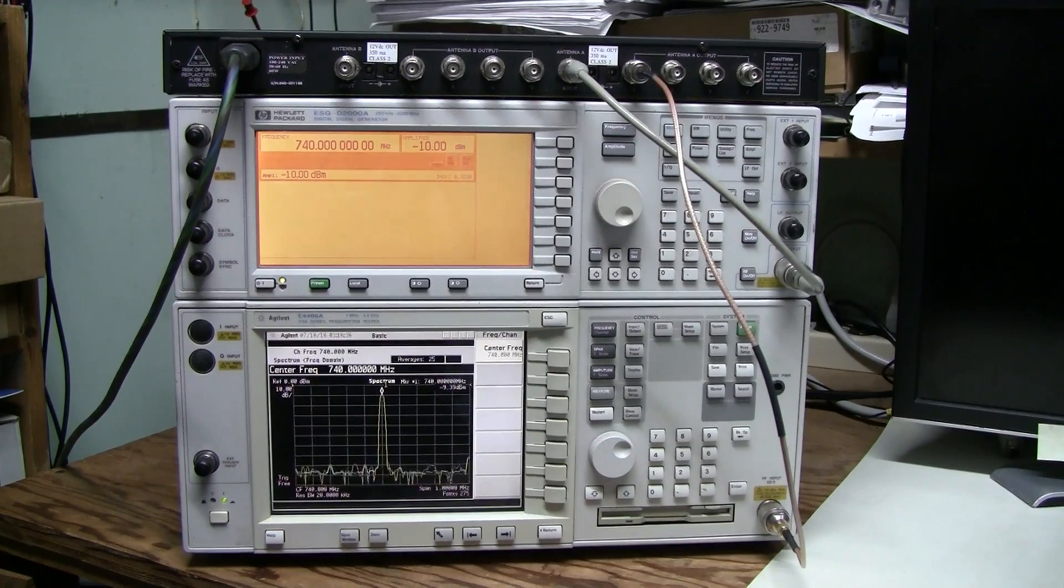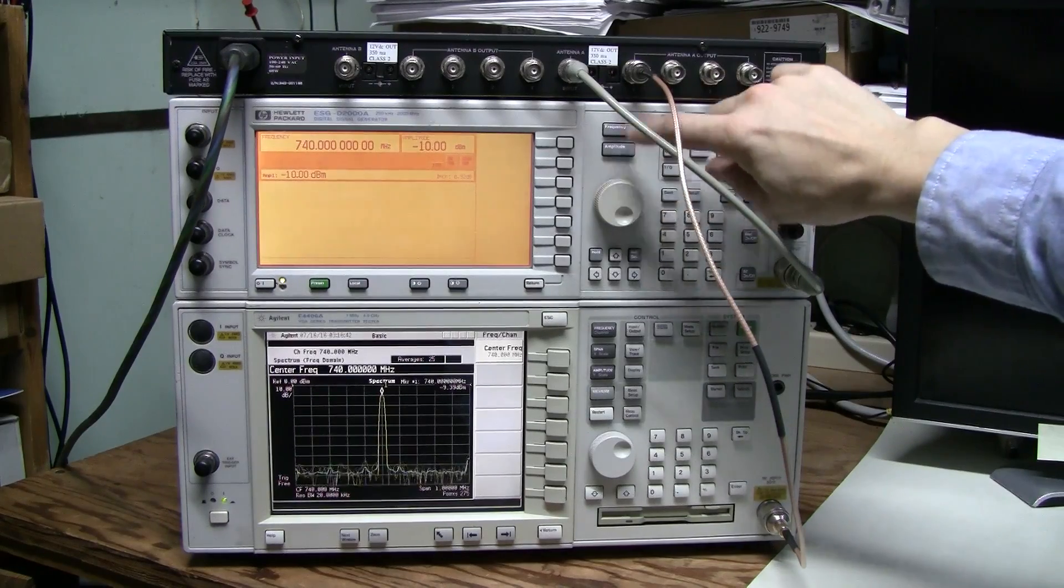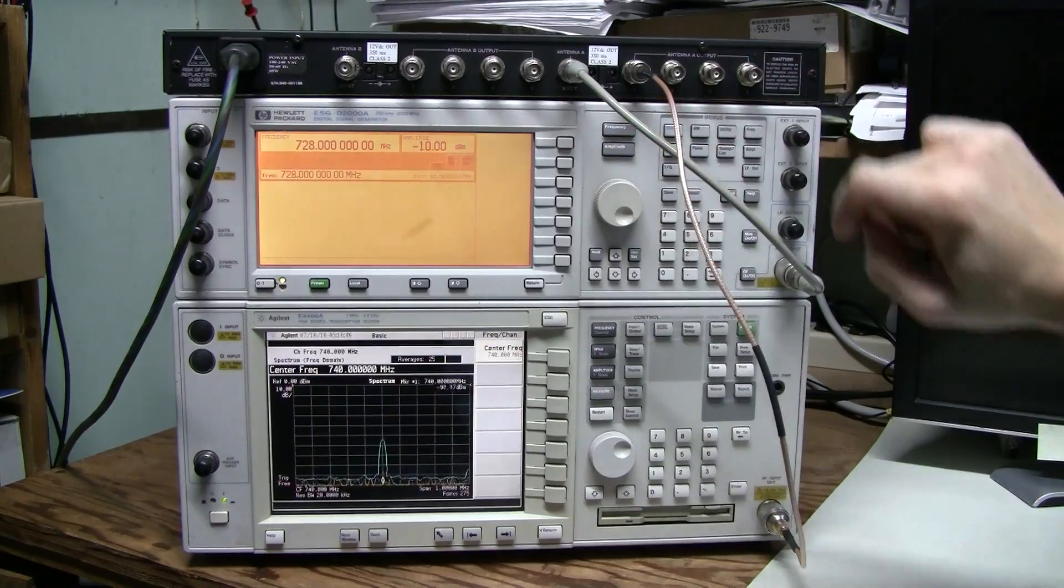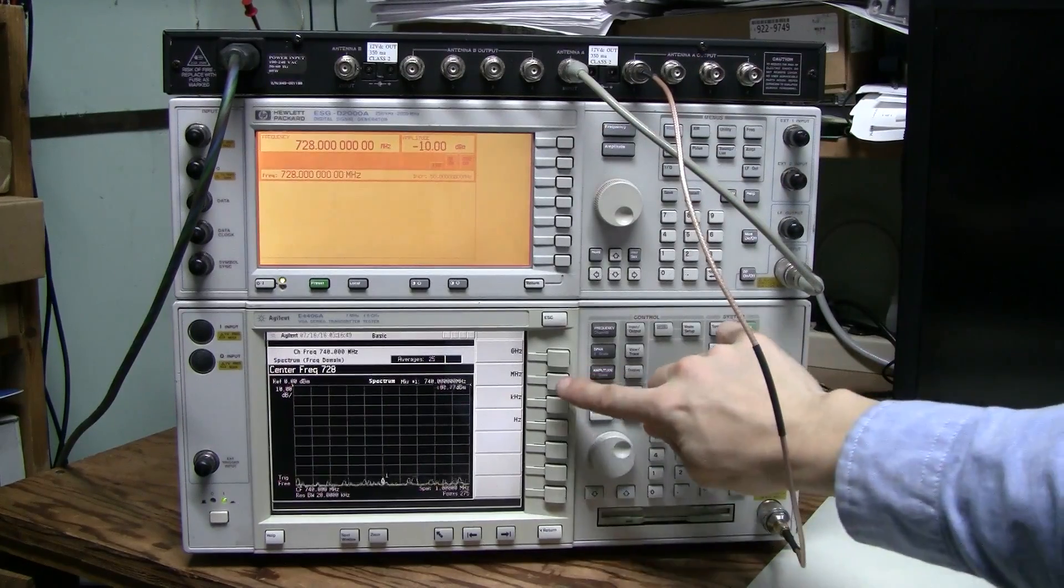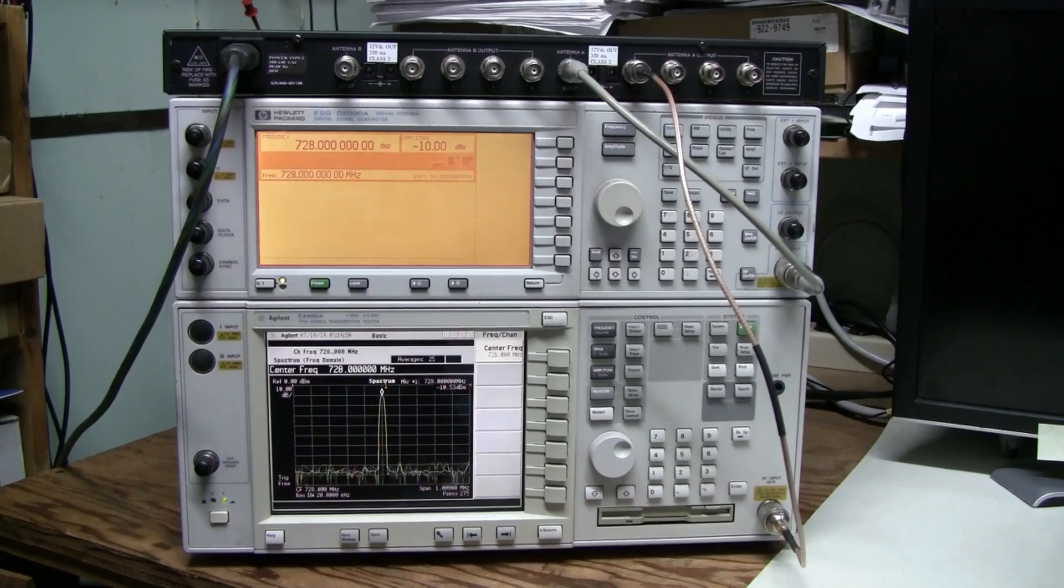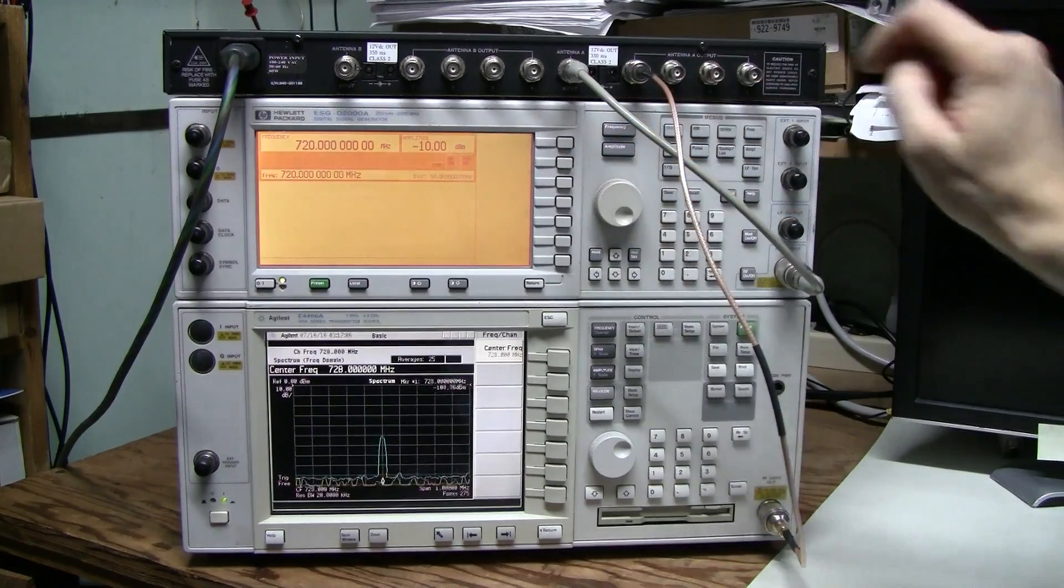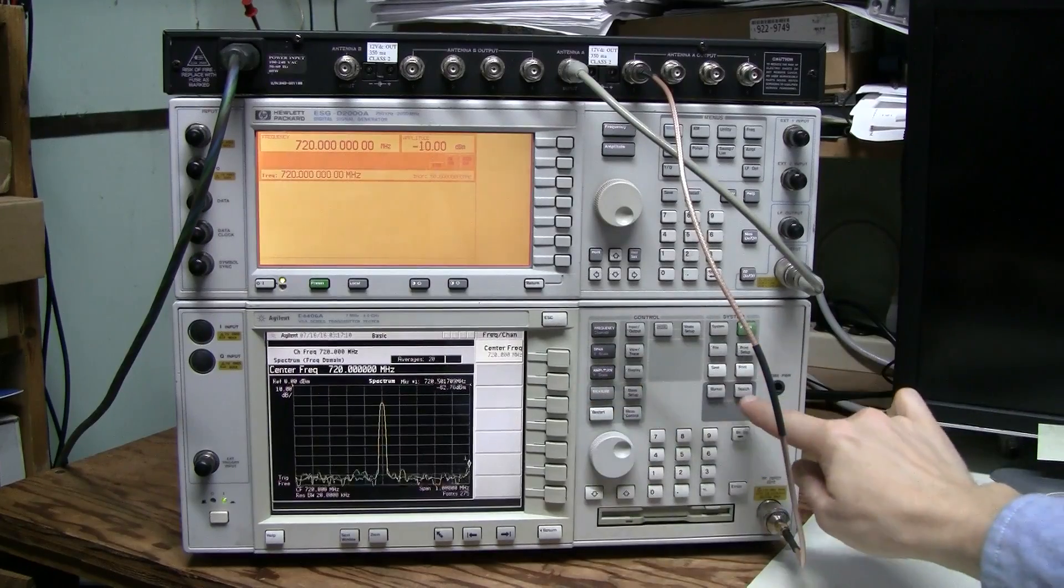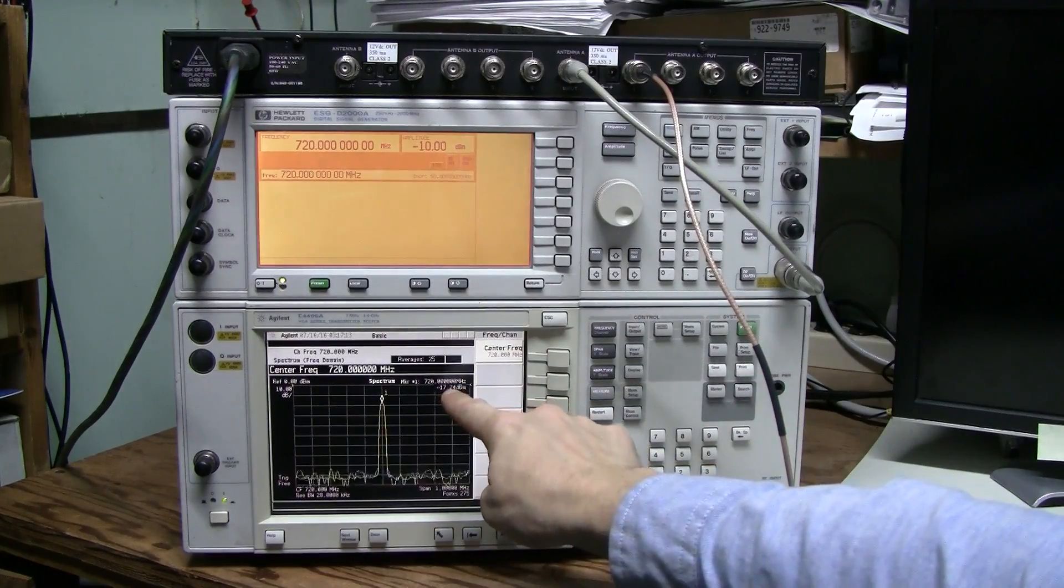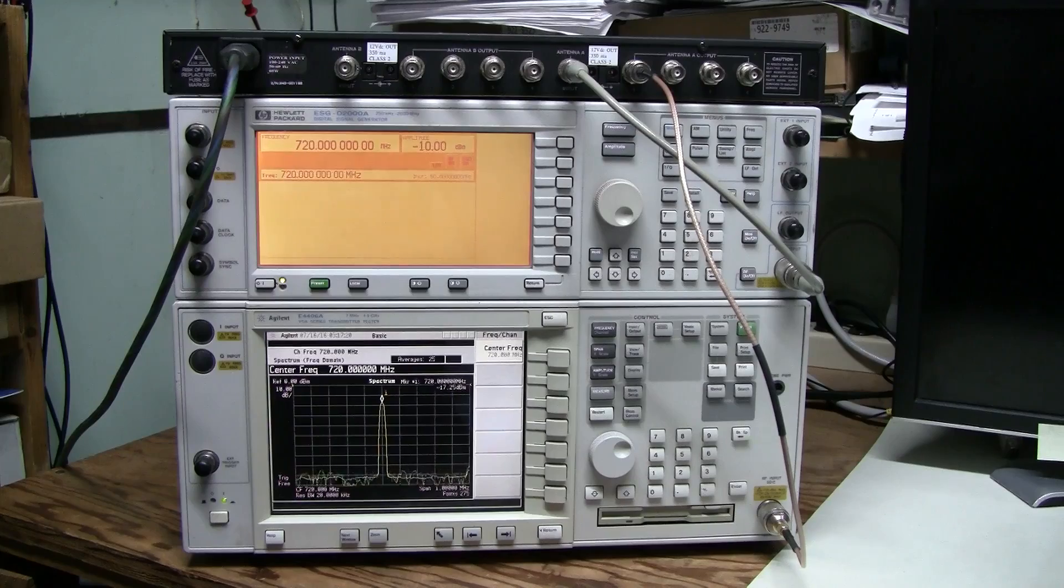Now let's see what happens if we go to the lower limit of the frequency range specified, which is 728 MHz. Now we see minus 10.5 dBm, which is still okay. And now let's go outside of the specified range. Let's go to 720 MHz and 720 here. So now we see minus 17 dBm, which is 7 dB down.